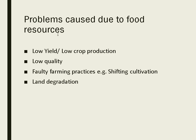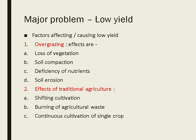Problems caused by food resources include low yield, low quality, faulty farming practices, and land degradation. Factors causing low yield include overgrazing — which causes loss of vegetation, soil compaction, nutrient deficiency, and soil erosion — and traditional agricultural practices like shifting cultivation, burning of agricultural waste, and continuous cultivation of a single crop, which makes soil barren.